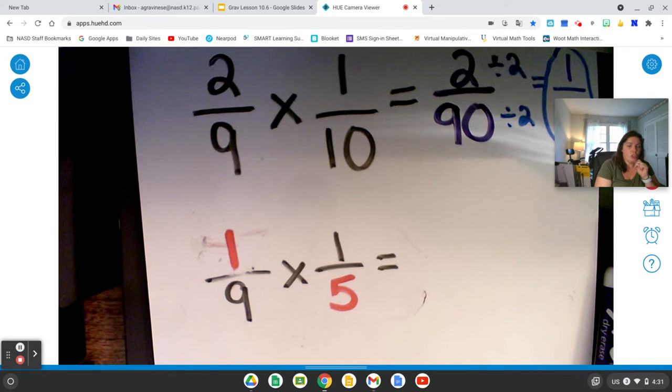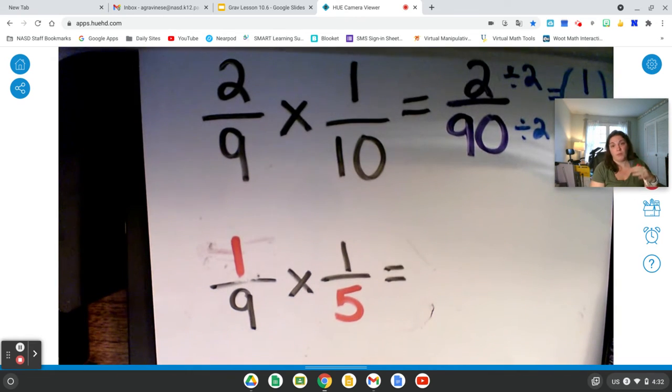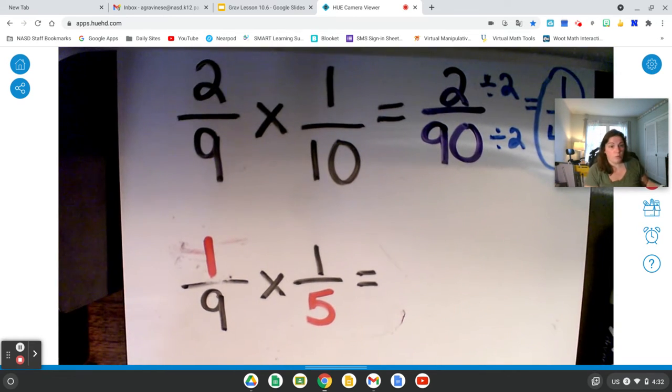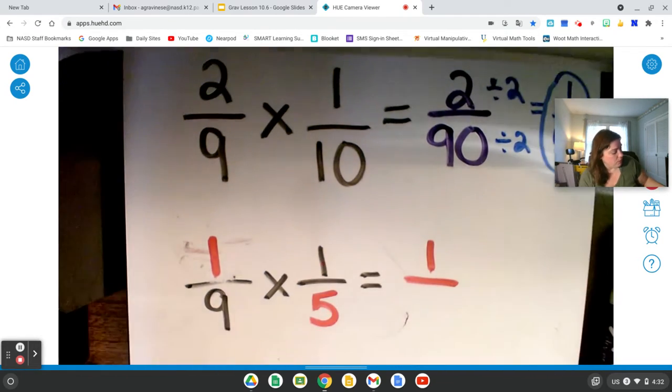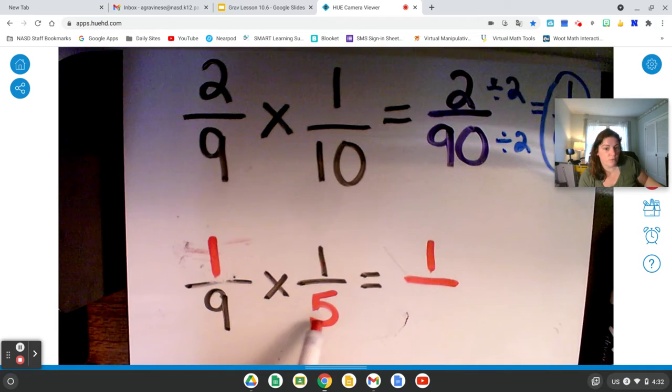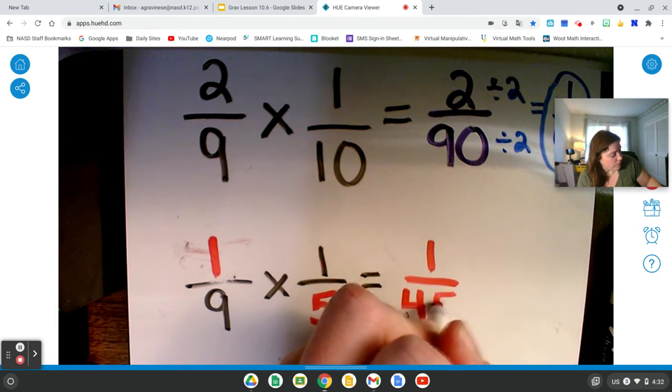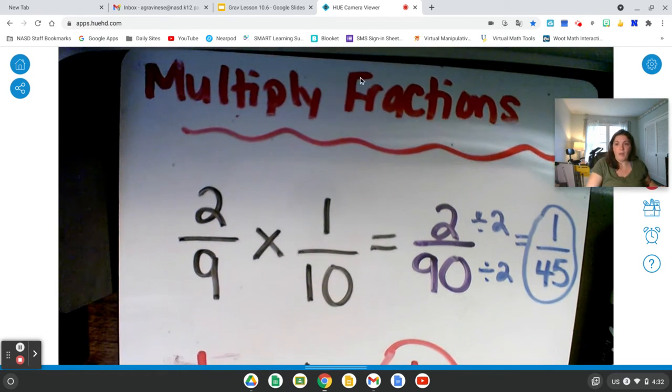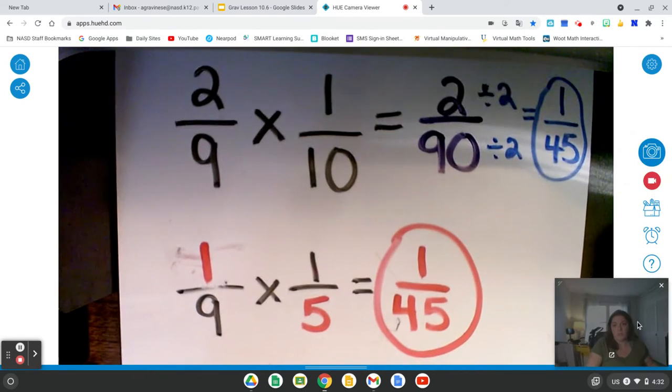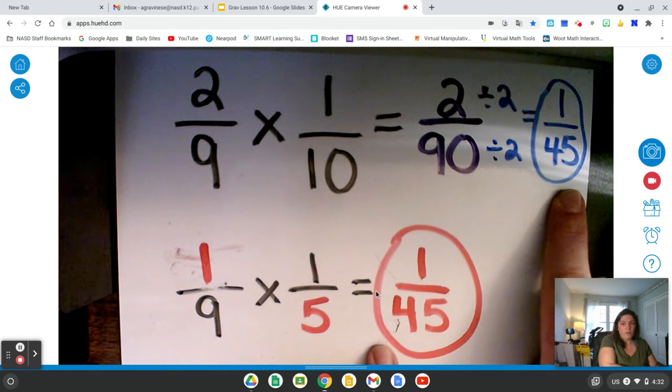Now, you might think, well, she changed the problem. We can't get the same answer. I did change the problem, but it still has the same value. I changed the look of the problem. I simplified the problem so that I might not have to simplify the answer. So let's multiply. Going across. 1 times 1 equals 1. And 9 times 5 equals 45. Oh, that is the same product we got without doing that method. So you can see we got the same products. 1/45.